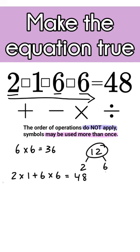So that means this is the order. 2 times 1 plus 6 times 6. This is how you make this equation true.